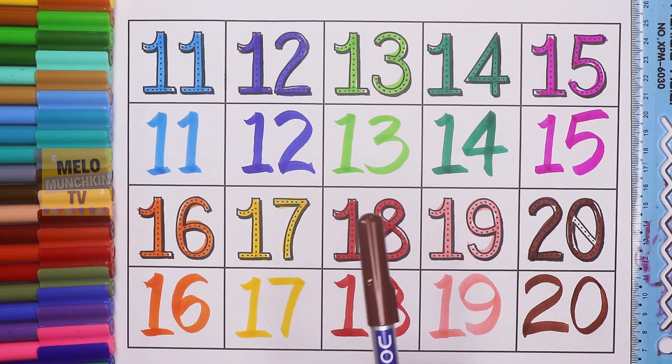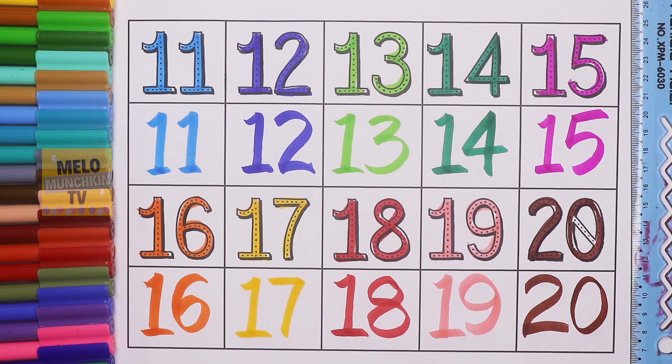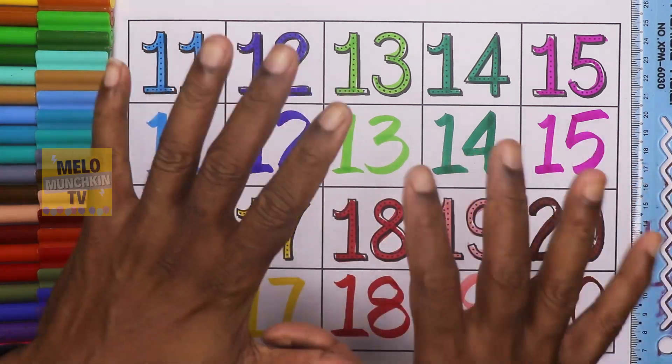This is brown color. So finally, we have completed our numbers from 11 to 20. I hope you have learned something from this video, kids. And if you do, don't forget to hit thumbs up and share this video with your friends. So see you in my next video, kids. Till then, take care and bye-bye.